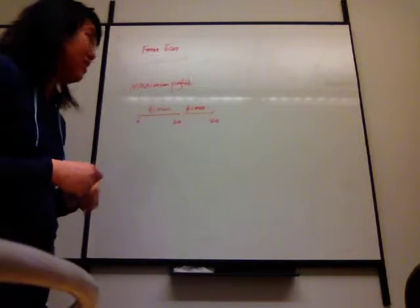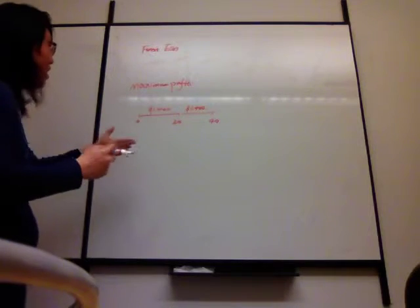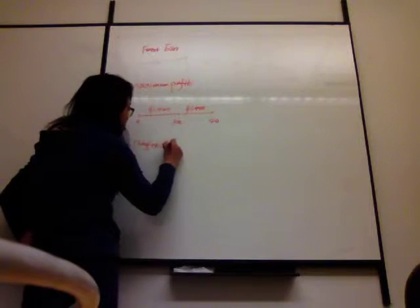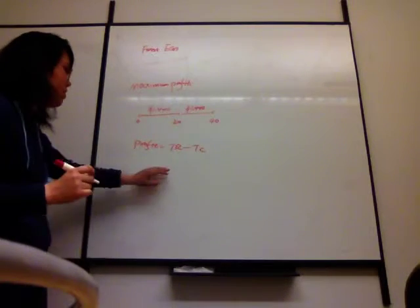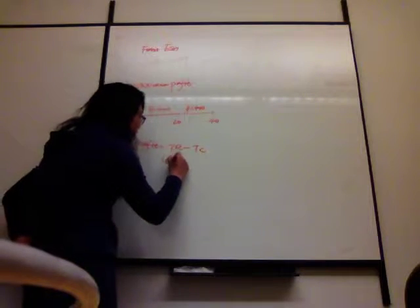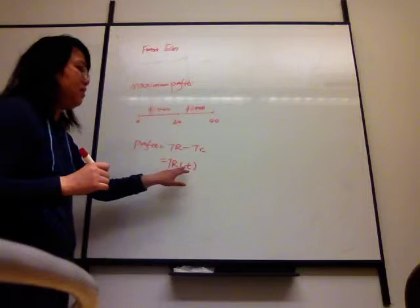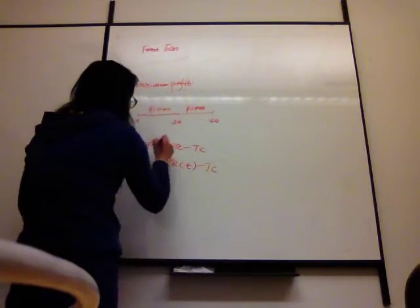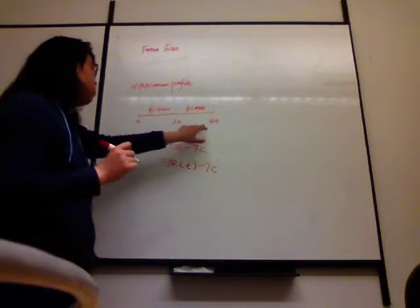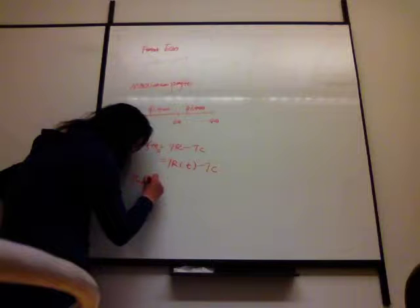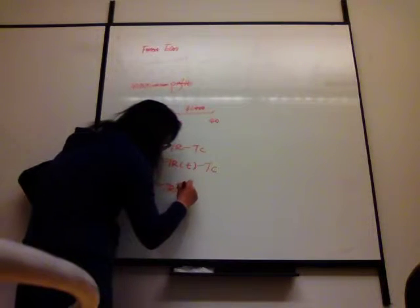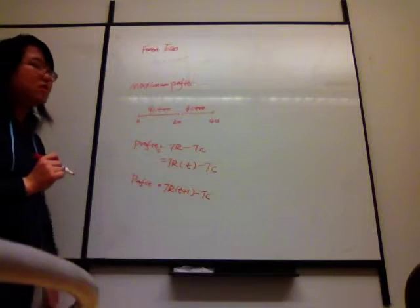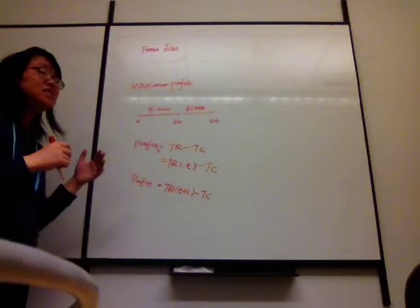Based on the previous part, we already know how to calculate the profit — total revenue minus total cost. Now let's make the total revenue a dynamic term: the total revenue becomes a function of time. So the profit from year 0 to year 20 uses the revenue function of t, and the profit from year 20 to year 40 uses the revenue function of t plus 1, minus total cost.